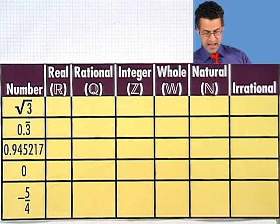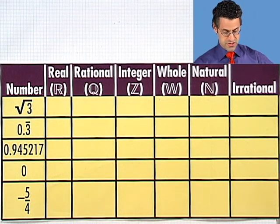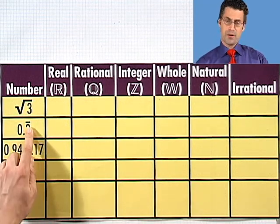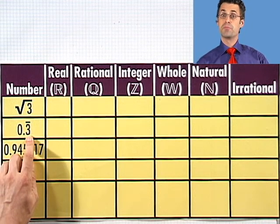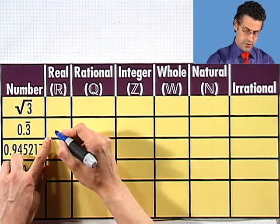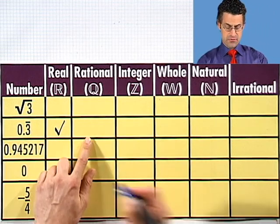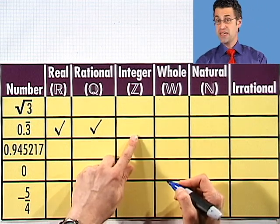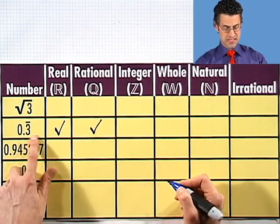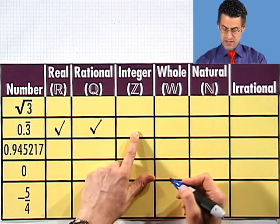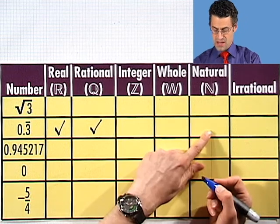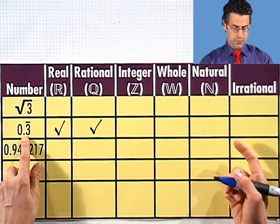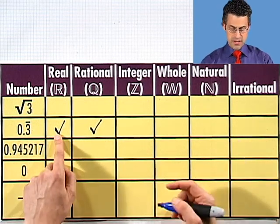So let's try and see if we can actually check off all that apply for each of these numbers. So let's start with the second one. I'm going to leave the first one for last. So 0.3. Now that bar, remember, means that it's 0.333 repeating forever. It's a real number. And since it repeats forever, this decimal expansion, it's a rational number. But it's not an integer because there's this decimal part to the right of the decimal point. So it's not an integer and therefore it's not a whole number. It's not a natural number. And since it's rational, therefore it's not irrational. So 0.3 with a bar is a real rational number.